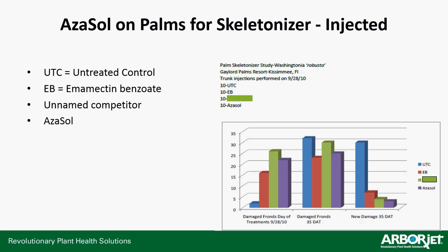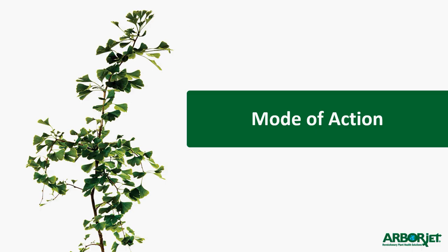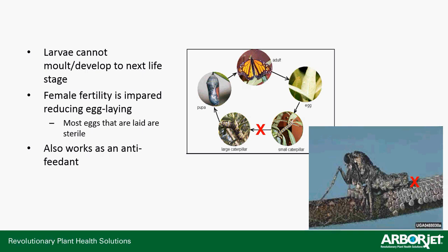Looking at the new damage — the difference between those two measurements — Azazol actually had the least amount of new damage, meaning it was chasing away the existing adults and also stopping the larval stages from developing into new adults. As for its mode of action, this works in a number of different ways. The biggest thing is that larvae cannot molt and develop into the next life stage — they get stuck there and end up dying. Female fertility is impaired: it reduces egg-laying, and the eggs that are laid are typically sterile, so they don't hatch. For the remaining adults, it works as an antifeedant. So you get three different ways of control out of one product.